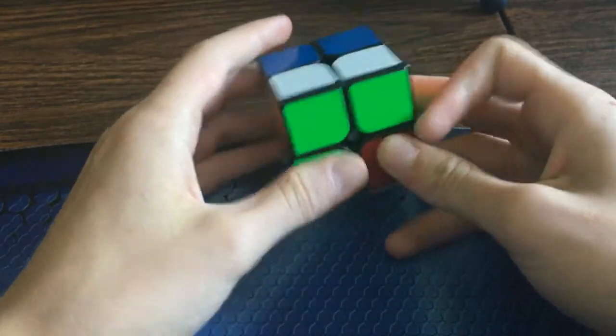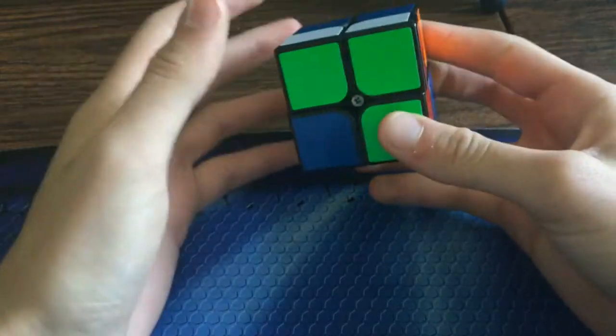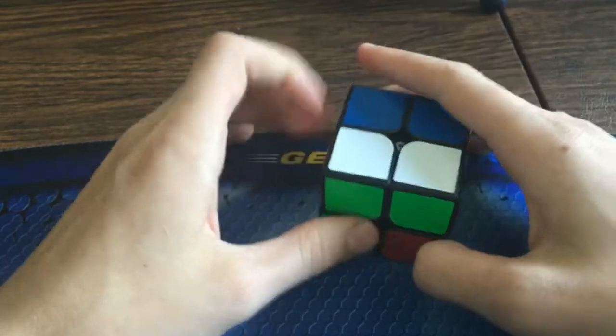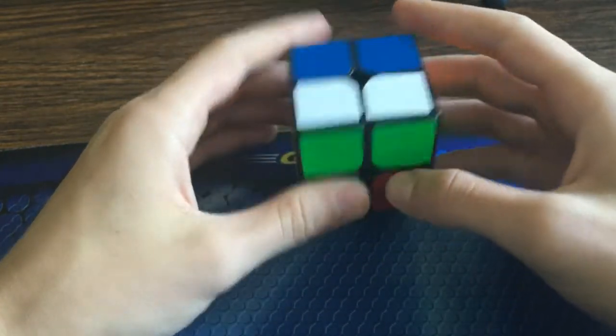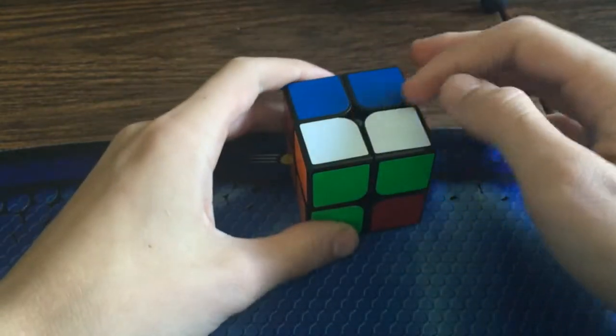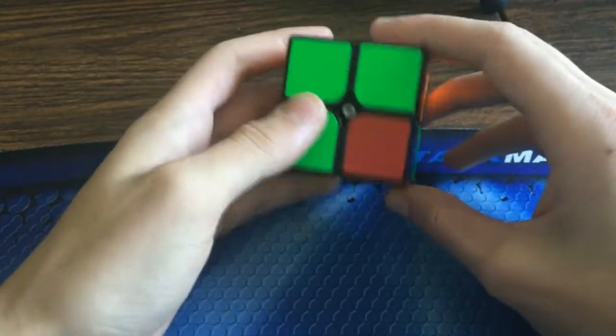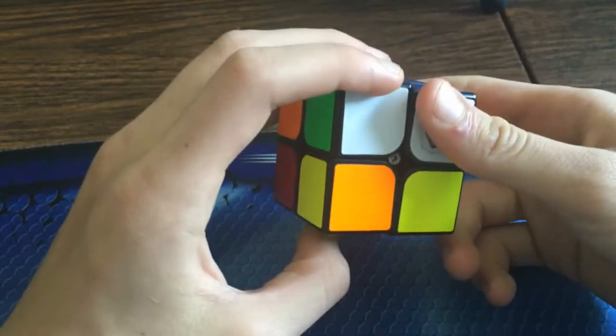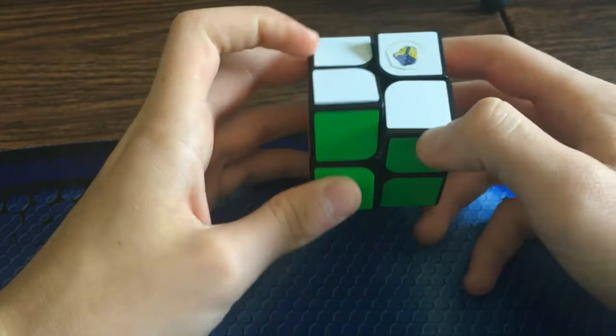So for this next U case alg, it's actually really fast, and a lot of people actually use this for their EG1 alg—I believe Daniel Karnaukh did at some point, he told me. So yeah, it's really easy: you just hold it like this, and then it's R U R' F R2 F' R U' R'.